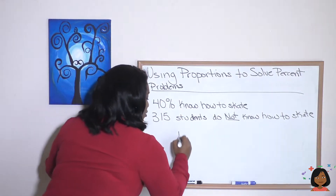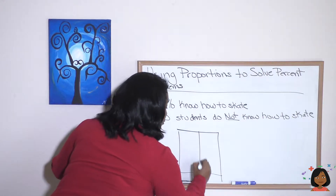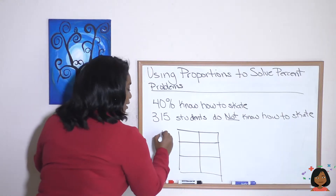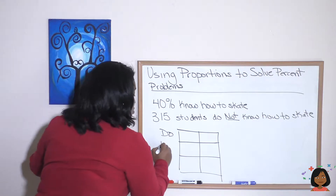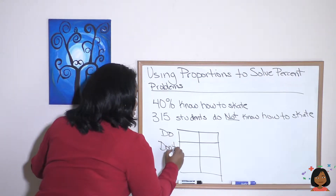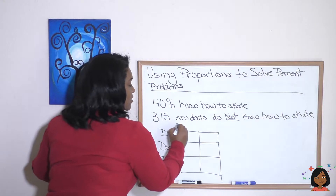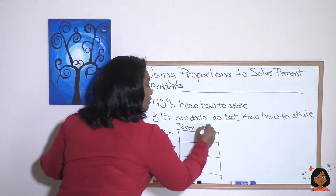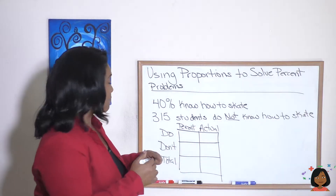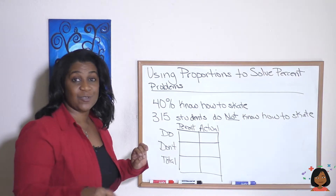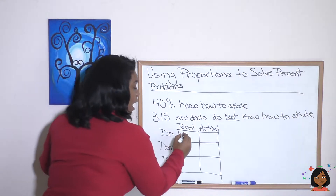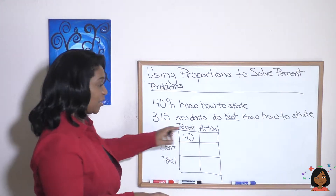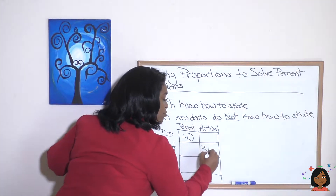I'm going to draw my ratio box with three rows. The first row is for students who do know how to skate, then don't, and then total. Across the top I'll write percent and actual. 40% of the students know how to skate, so I write 40 in the do percent column. 315 students do not know how to skate, so 315 goes in the actual don't column.